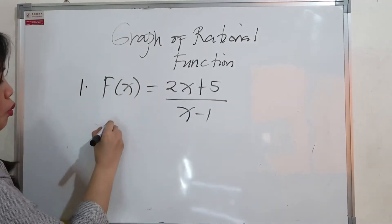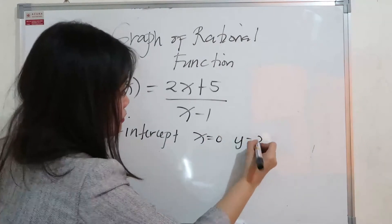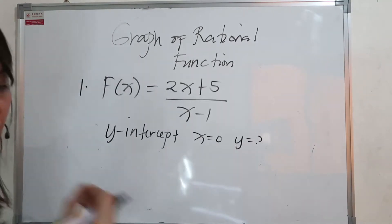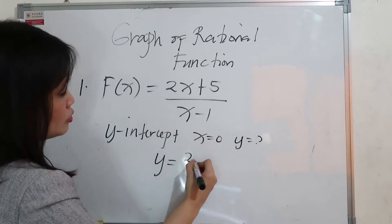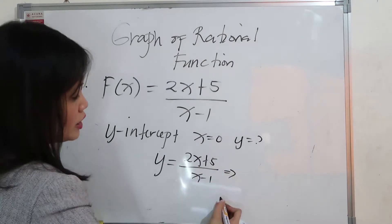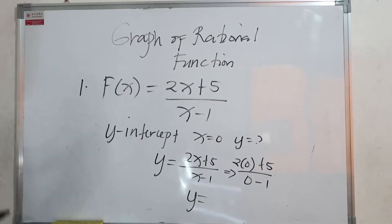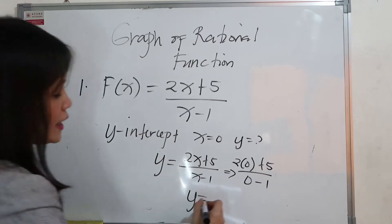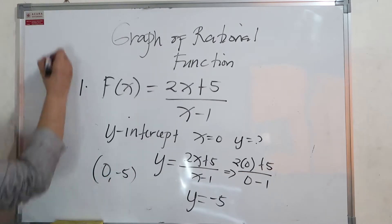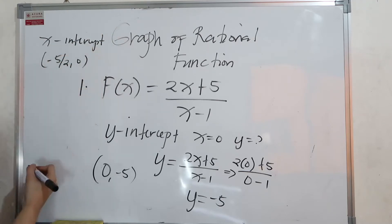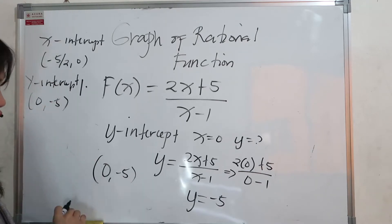Next is the y-intercept. For the y-intercept, if x is 0, what is the value of y? Substituting: y equals 2(0) plus 5 over 0 minus 1, which gives negative 5. So your ordered pair is 0 and negative 5. We have x-intercept at negative 5 halves, 0 and y-intercept at 0, negative 5.